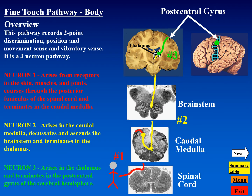This is a cartoon overview of the fine touch pathway from the body. This pathway deals with two-point discrimination, position and movement sensibility, and vibratory sense. As you can see, it is a three-neuron pathway. Neuron one ascends the posterior funiculus, and in the caudal medulla it decussates. Neuron two then continues to ascend to the diencephalon region and projects to the postcentral gyrus.